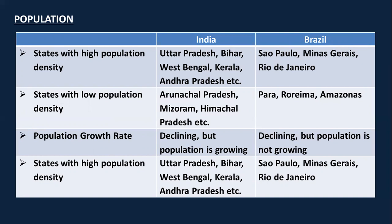India's population growth rate is declining, but the population is still growing — the rate at which it was increasing has been coming down. Similarly for Brazil, the highest population density is found in São Paulo, Minas Gerais, and Rio de Janeiro, while low population density is found in Pará.